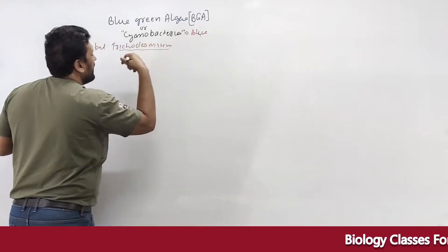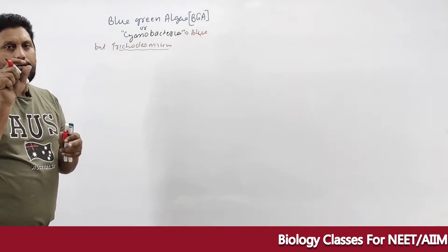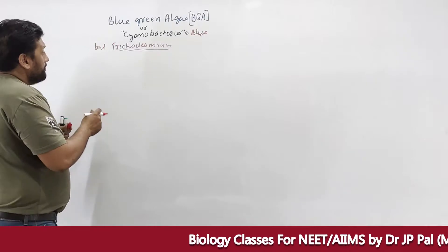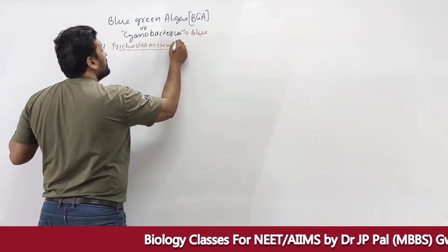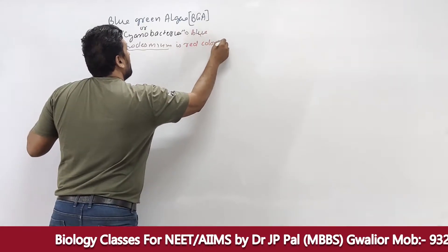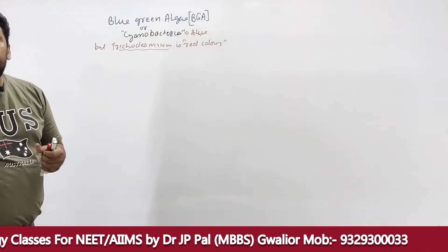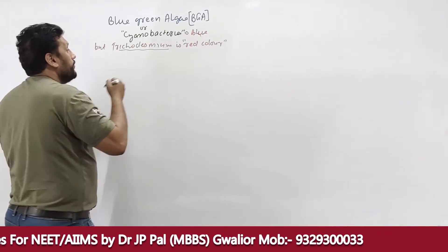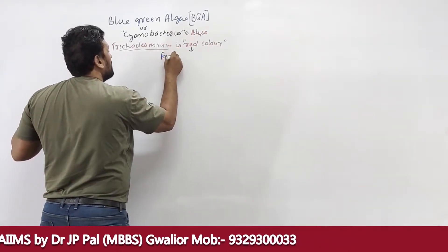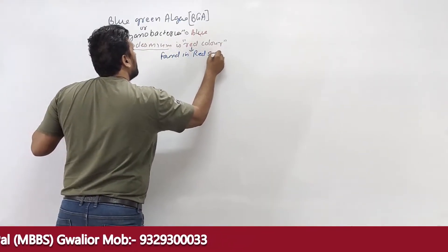Trichodesmium is an example of BGA that is red in color. This red-colored BGA is found in the Red Sea, which is why the Red Sea gets its name.